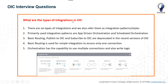The next question is: what are the types of integrations in OIC? There are six types, also referred to as integration patterns or styles. When creating an integration, you choose the integration style. These are: Basic Routing, App-Driven Orchestration, Scheduled Orchestration, File Transfer, Publish to OIC, and Subscribe to OIC. The most popular and primarily used ones are App-Driven Orchestration and Scheduled Orchestration. Basic Routing, Publish to OIC, and Subscribe to OIC are deprecated in the latest versions.